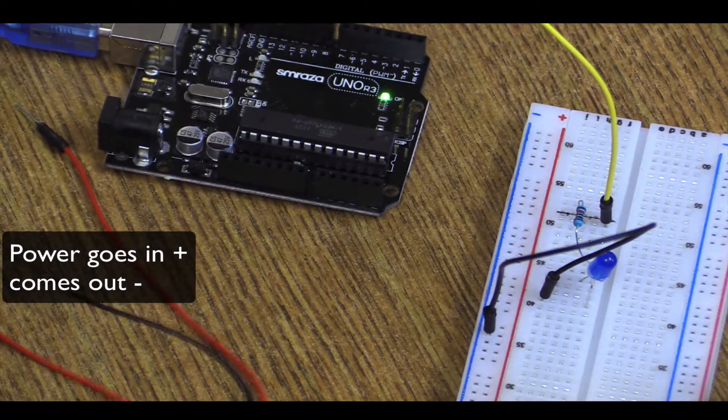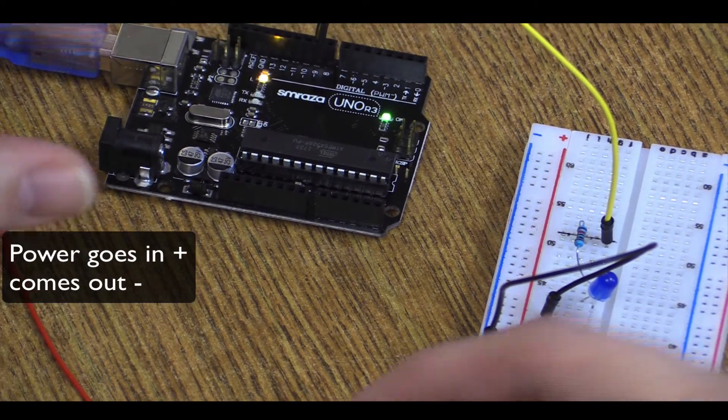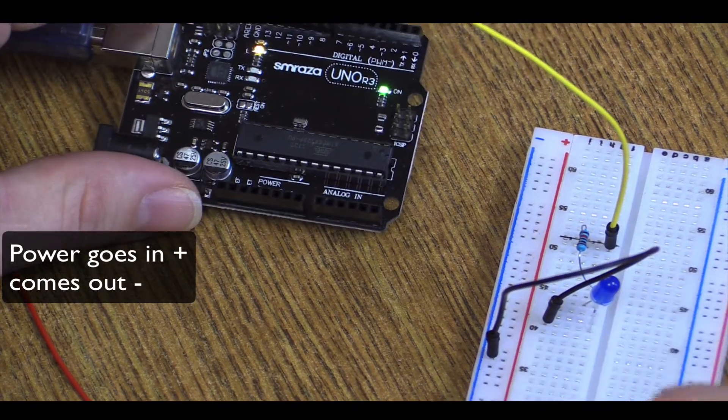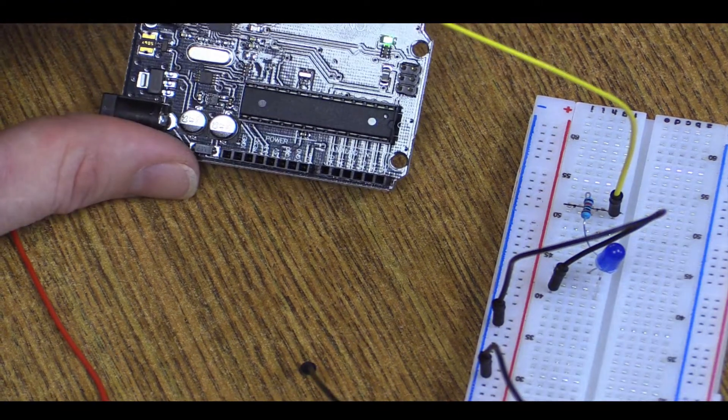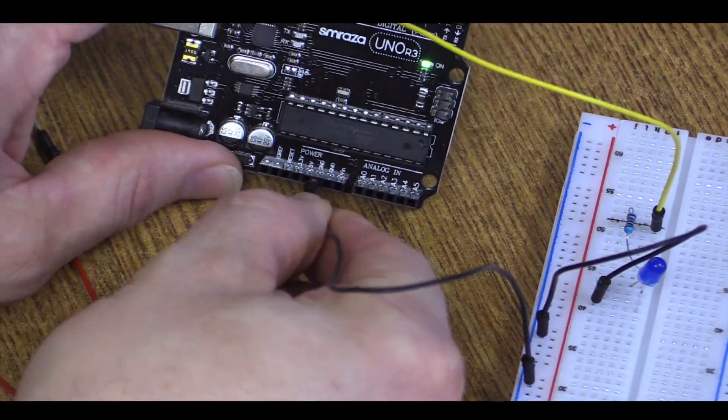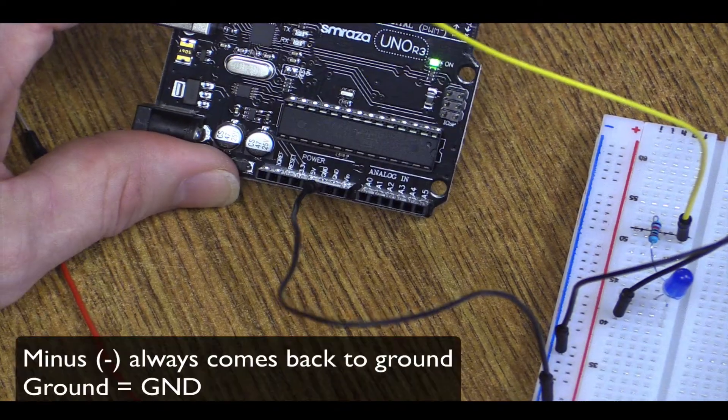Then, as we did in our previous episodes, we're going to go from that anywhere on the negative line. It doesn't matter. Plug that in there, go over to our board and go to GND or ground. Now we've got a circuit.